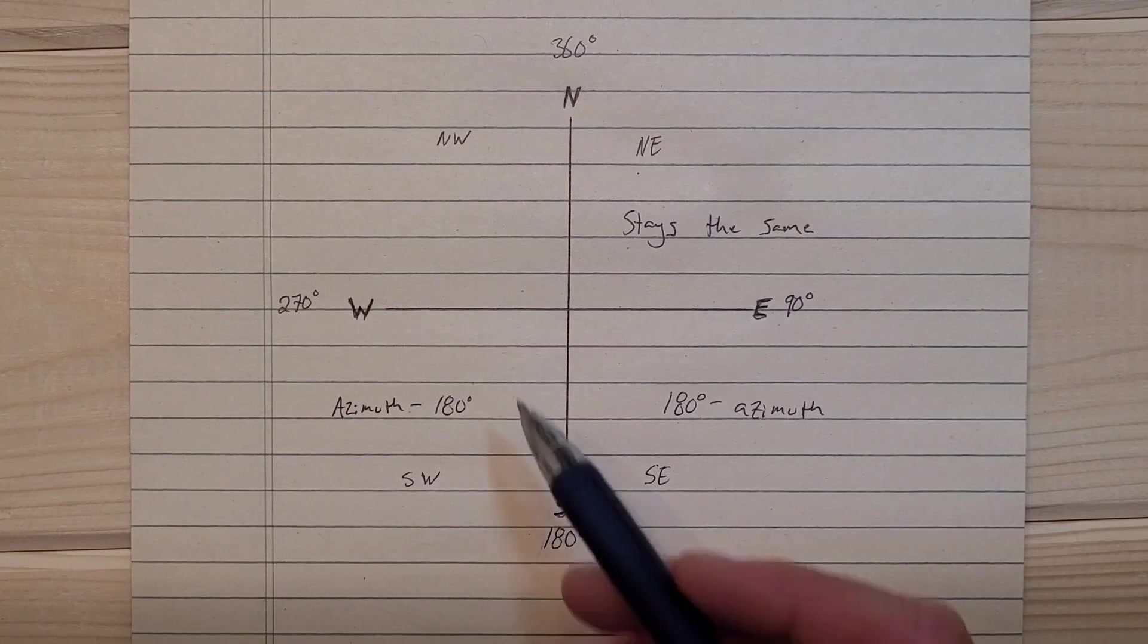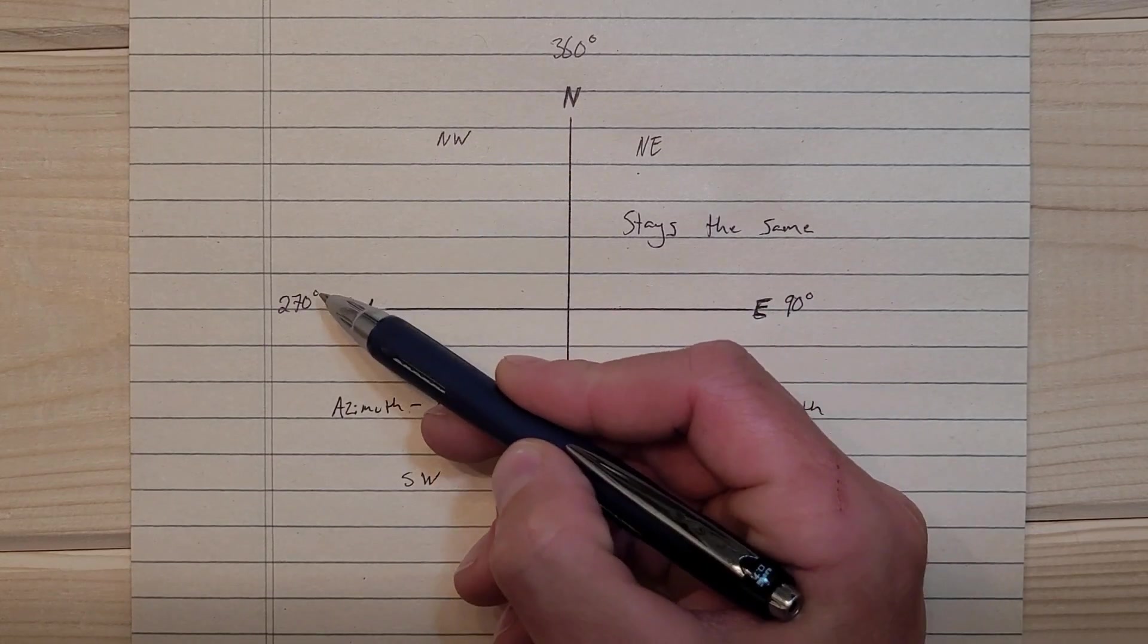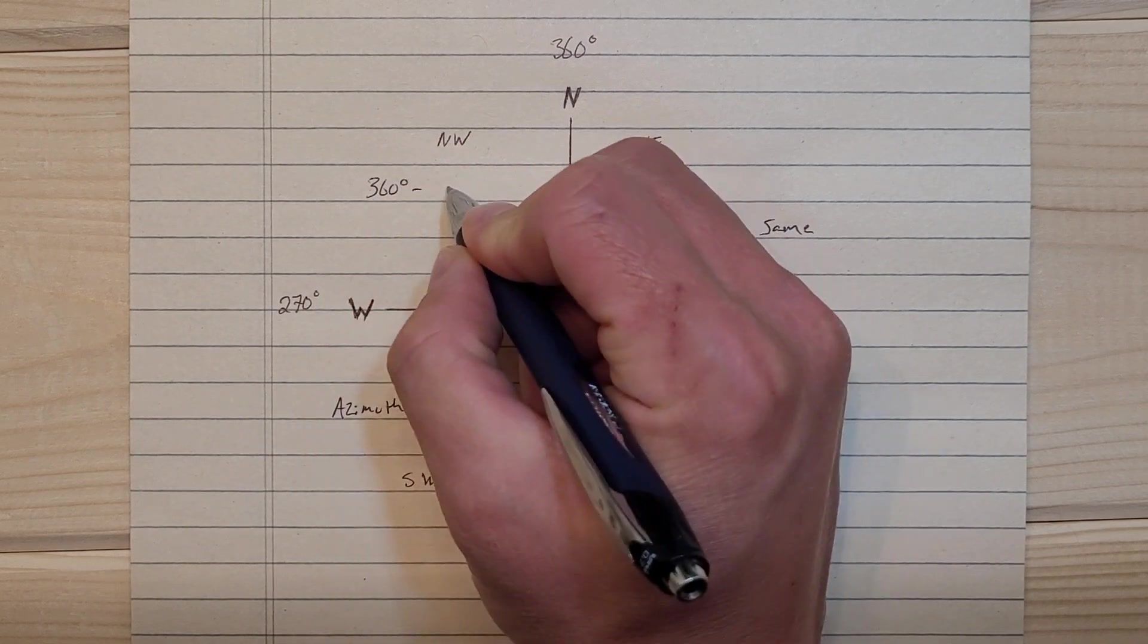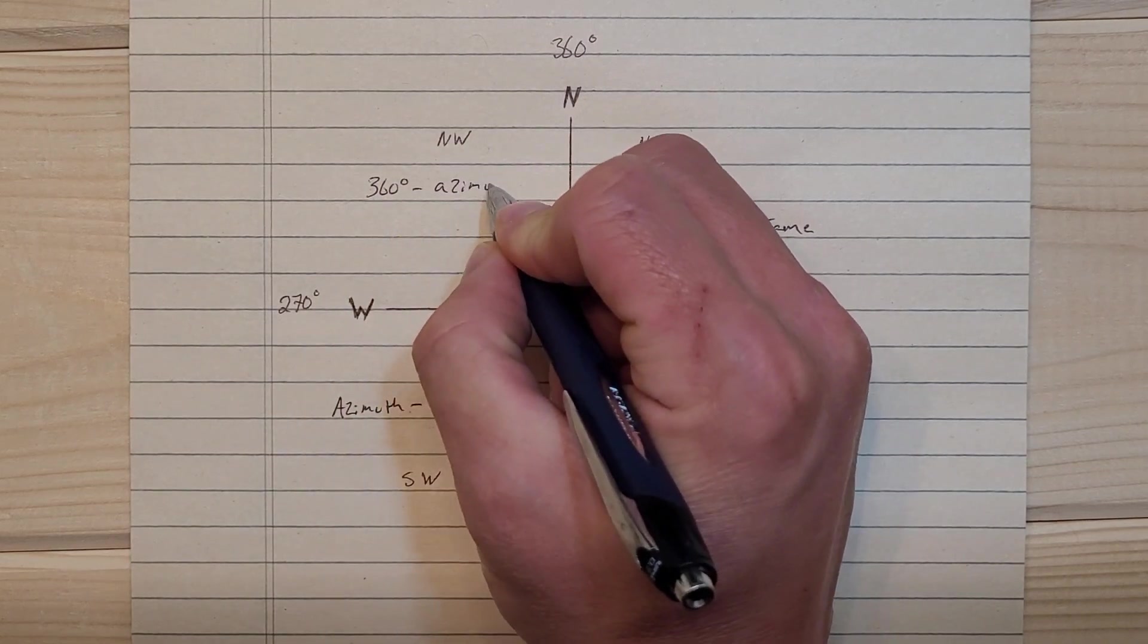If you're given an azimuth that falls within this quadrant here from 270 to 360, you just do 360 degrees minus the azimuth.